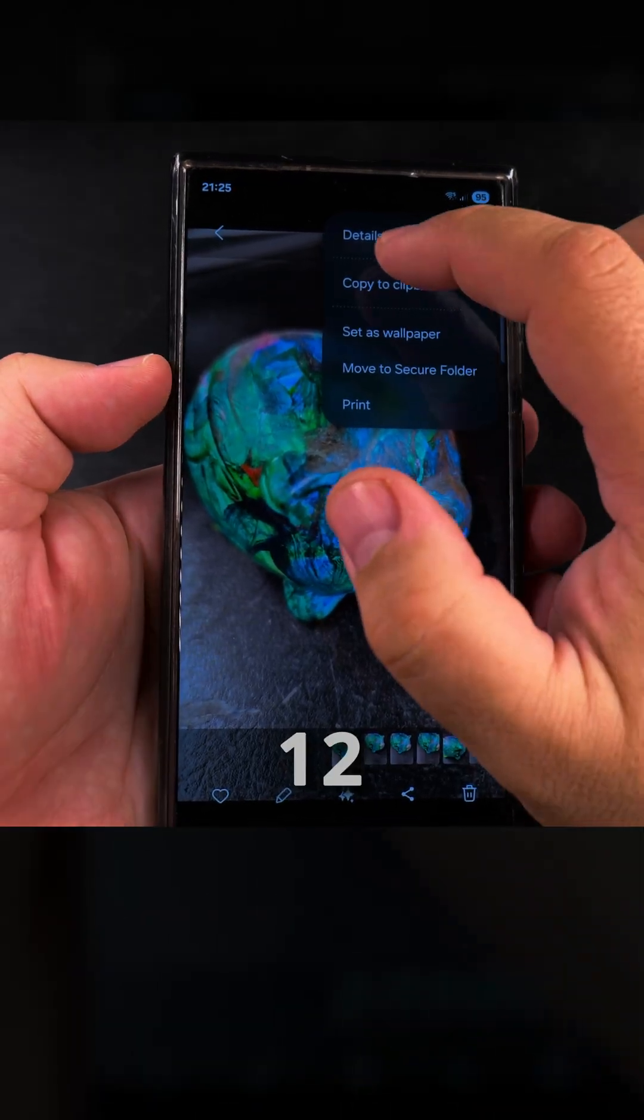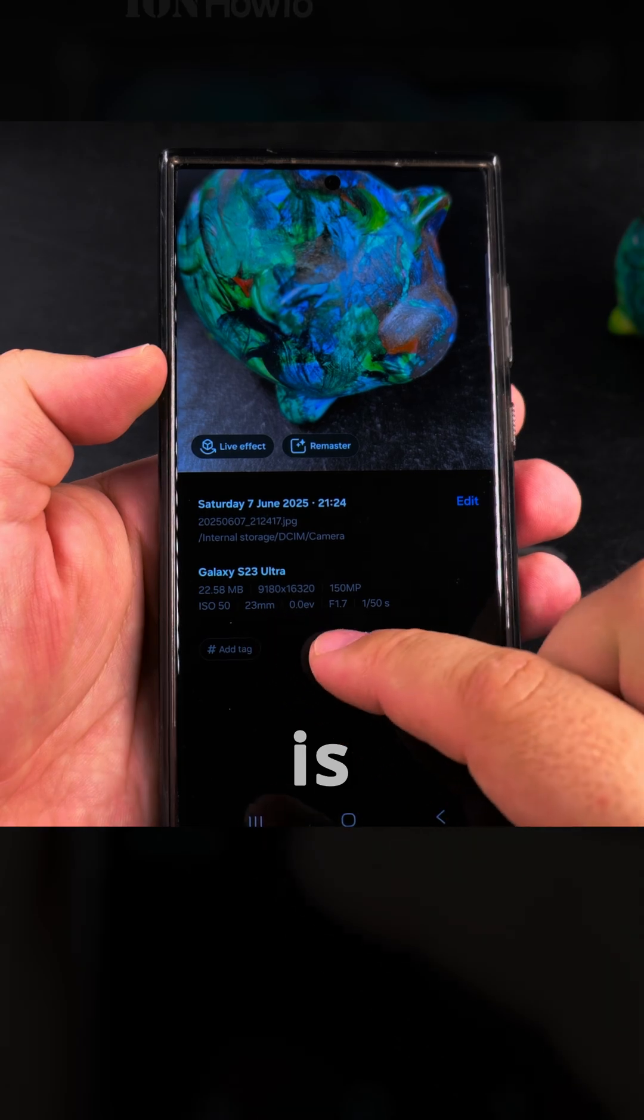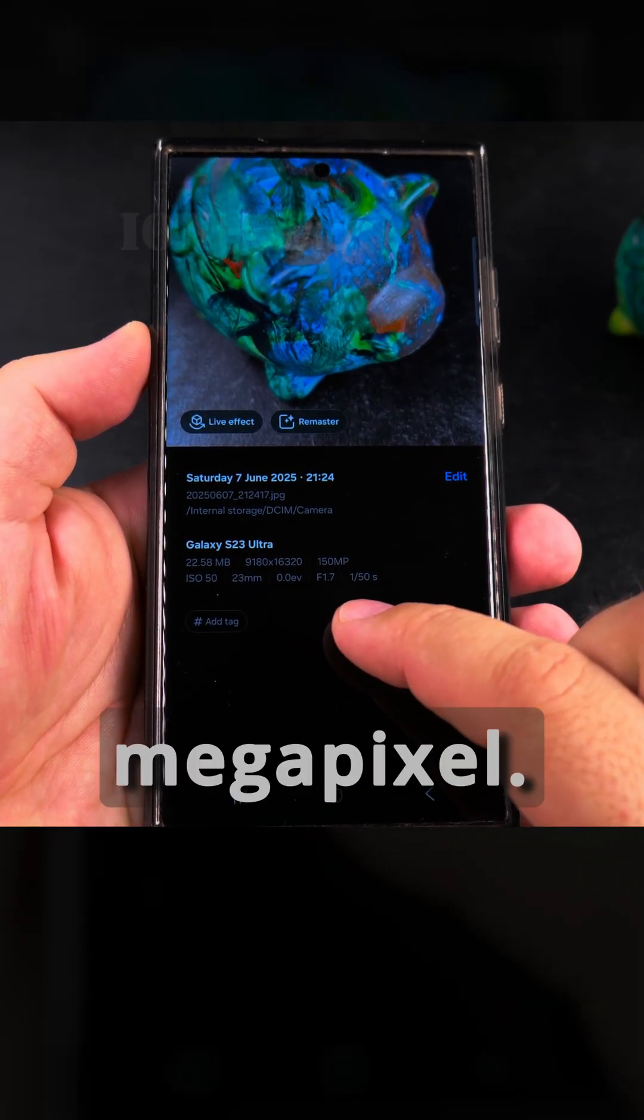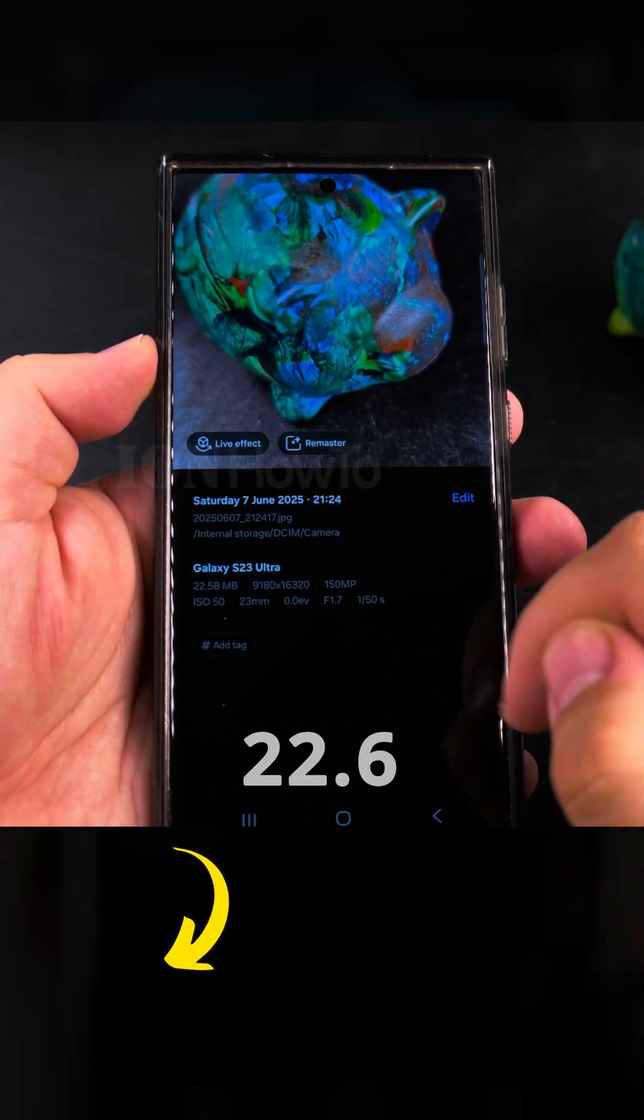The problem with those modes—12 versus 50 versus 200—is that the only one that works with multiple lenses is the 12. So this one is 150 megapixels, so that's actually not 200, and it's 22.5 megabytes.